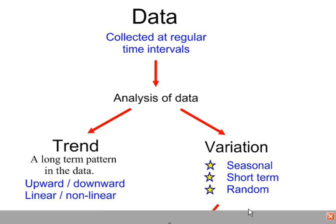Patterns in your time series may be of the form of a seasonal variation, which is a regular predictable pattern. You may find you have short-term variation or random variation.